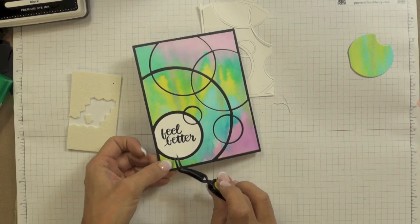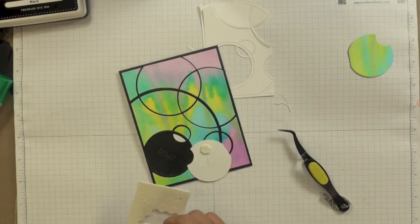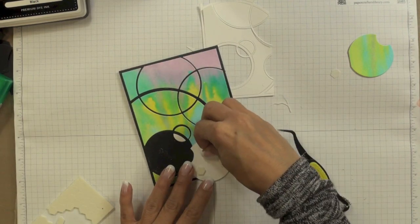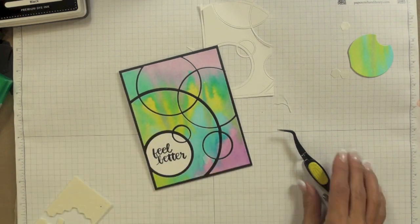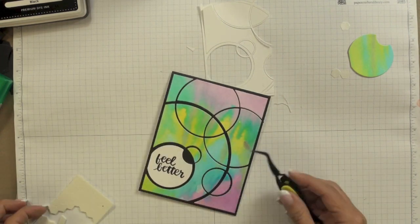Now prior to actually stamping my sentiment off camera I had removed that circular piece and applied a little bit of repositionable adhesive to the back of it to hold it in place on my card as I stamped so that it wouldn't shift while I was stamping.